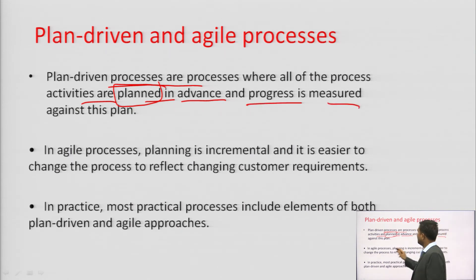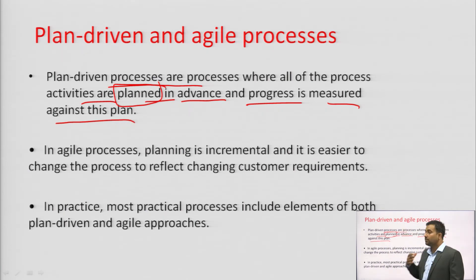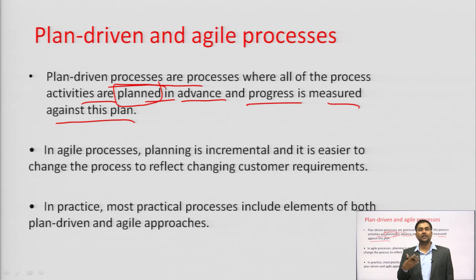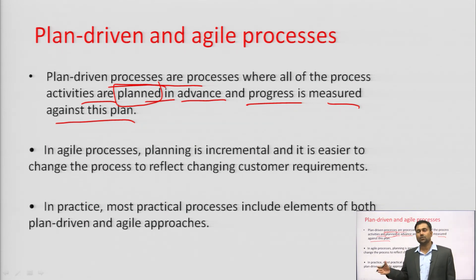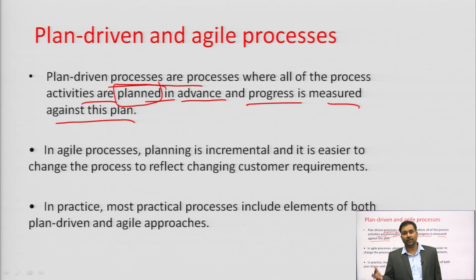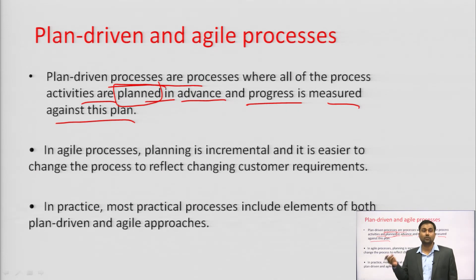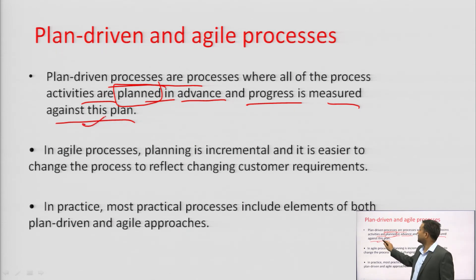Process progress is measured against the plan regularly. Based on measurement, quality improvement procedures are applied. If resources are lacking, training is arranged; if delivery may be delayed, resources are hired to speed up — ensuring we don't go over budget. All these things are measured time to time.